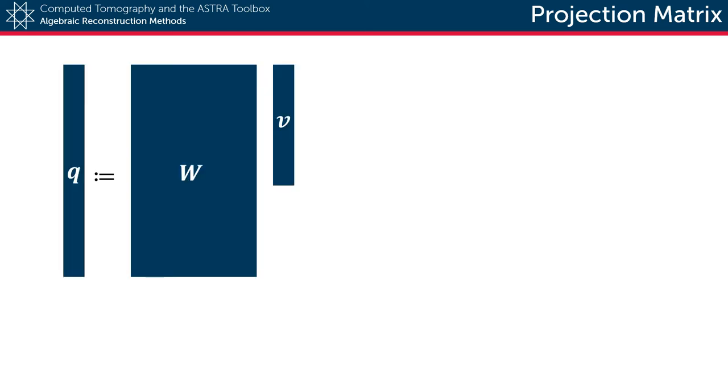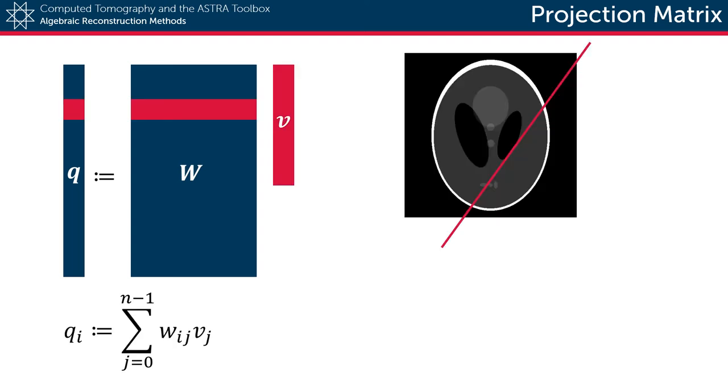Visually it would look something like this. If we then single out a certain point of the resulting vector, we get a linear combination of all voxels, weighted with how much they contribute.